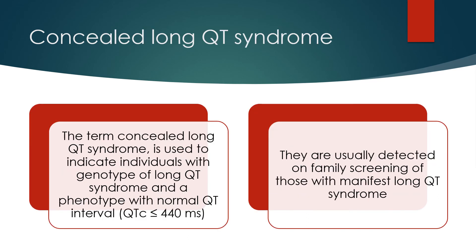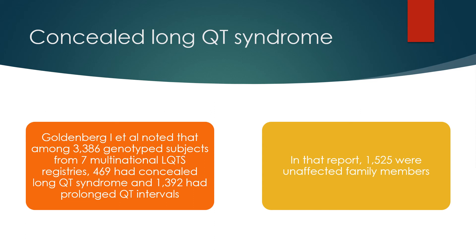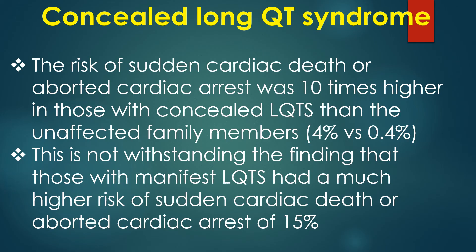The term concealed long QT syndrome indicates individuals with the genotype of long QT syndrome but a phenotype with normal QT interval. They are usually detected on family screening. Goldenberg and colleagues noted that among 3,386 genotyped subjects from seven multinational LQTS registries, 469 had concealed LQTS and 1,392 had prolonged QT intervals, while 1,525 were unaffected family members. The risk of sudden cardiac death or aborted cardiac arrest was 10 times higher in those with concealed LQTS than in unaffected family members.